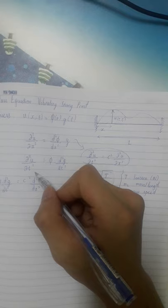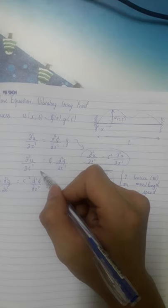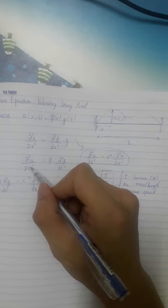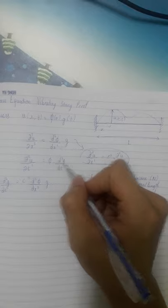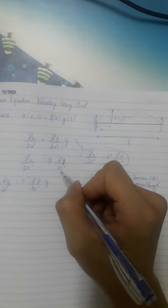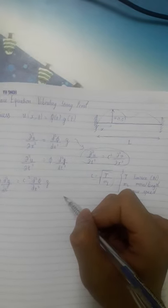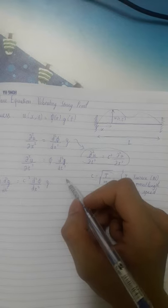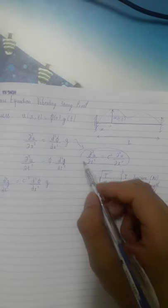And we know that ∂²u/∂t² equals phi times d²q/dt². So what happens if we differentiate this equation? Now what we're going to do is plug both of these equations into our one-dimensional wave equation and see what we get.